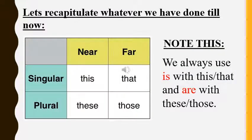Now let's recapitulate whatever we have done until now. We use the word 'this' with a singular noun when it is near to us. We use the word 'that' with a singular noun when the thing or the person is far from us. We use the word 'these' with a plural noun when the thing or the person is near to us. We use the word 'those' with a plural noun when it is very far from us. We always use 'is' with 'this' and 'that', and 'are' with 'these' and 'those'.